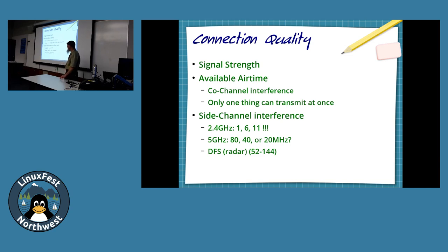Air — frequency — is a shared medium. Until recently, only one thing could transmit on one channel at a time. Now we're all transmitting in microseconds of airtime per packet. Things that don't work well together collide, then have to back off and randomly choose a time to retry. When your available airtime is decreased, all those collisions happen a lot more frequently.